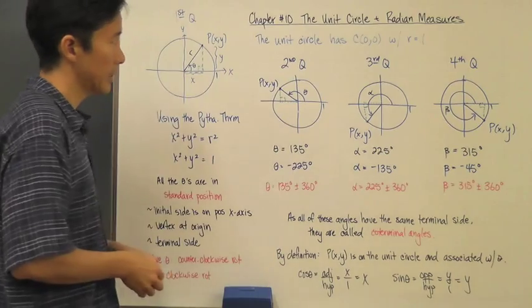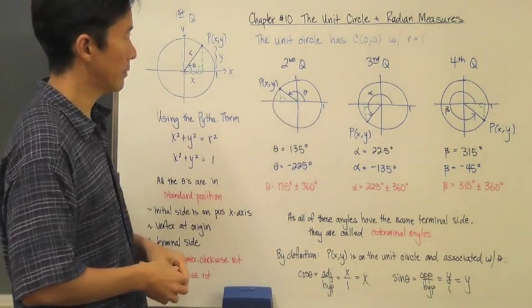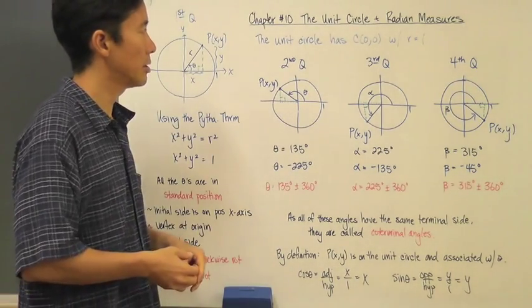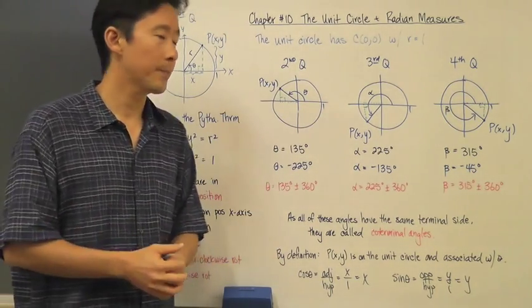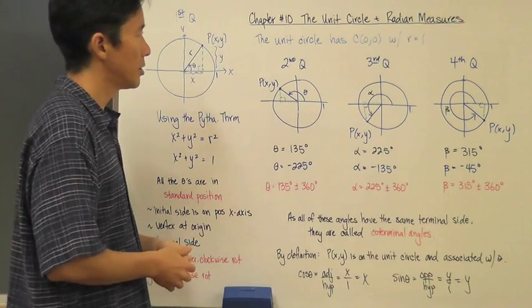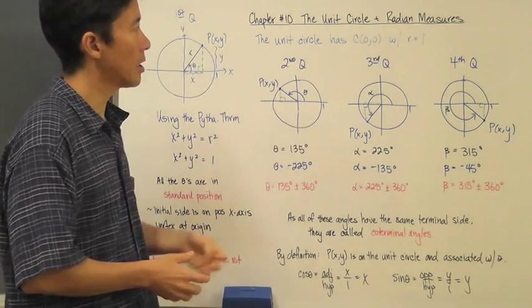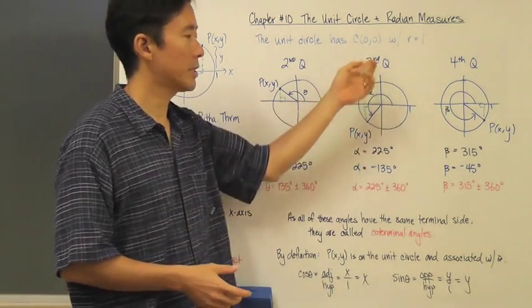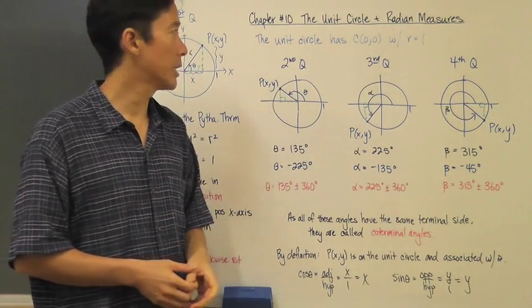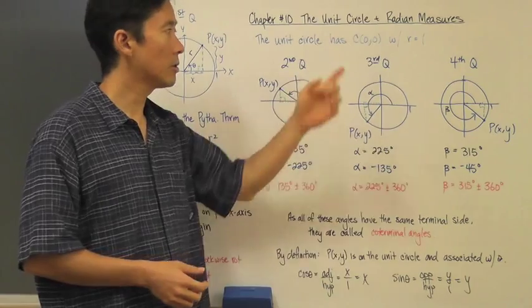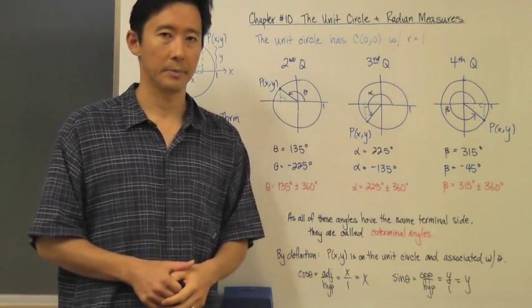Let's take a look at some things with regards to the unit circle. First of all, what is it? The unit circle is always going to have a center at (0, 0), or the origin, and it's always going to have a radius of 1.